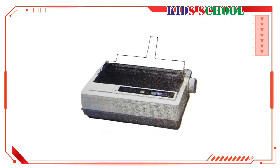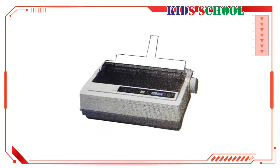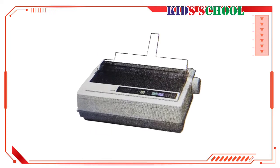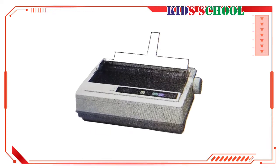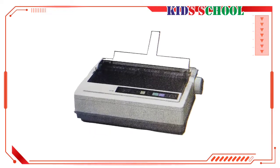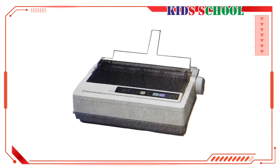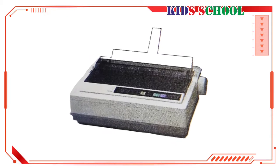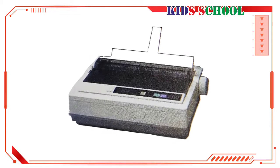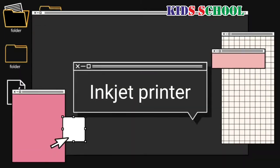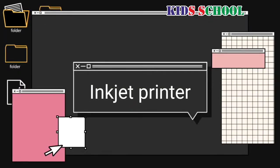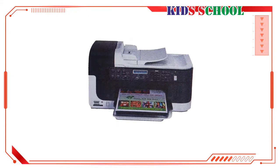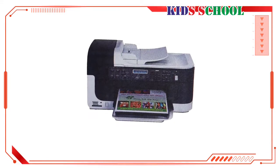In essence, a dot matrix printer has a small set of needle-like pins to print words or pictures. The words or pictures are printed in the form of dots. Most dot matrix printers print in black and white. A dot matrix printer is very noisy and slow.